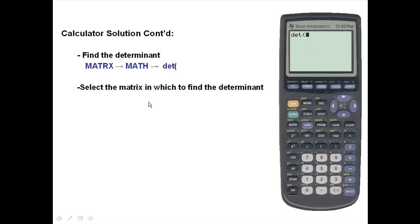Next, we want to select the matrix in which to find the determinant. We'll once again go back into the matrix, the second and the inverse key. We're going to select matrix A, which is already highlighted, so we're simply going to press enter.